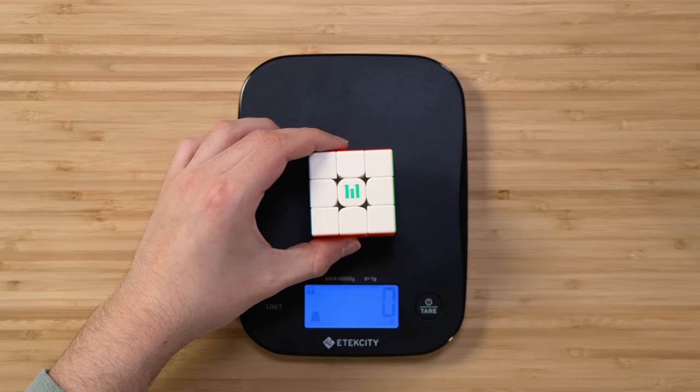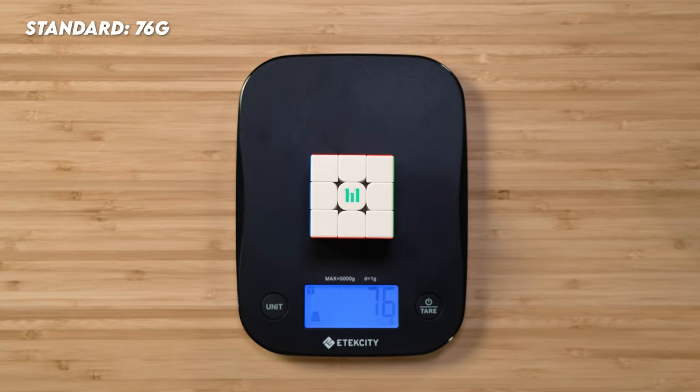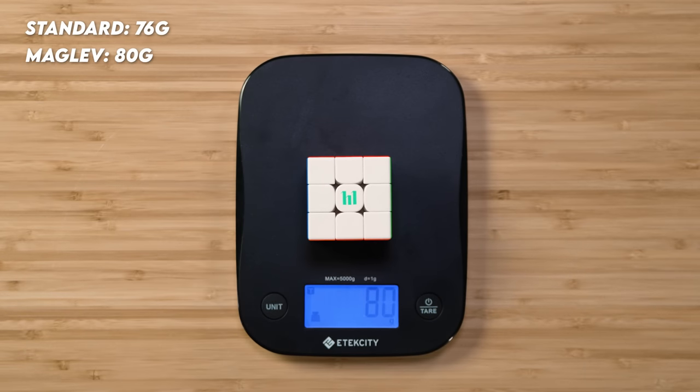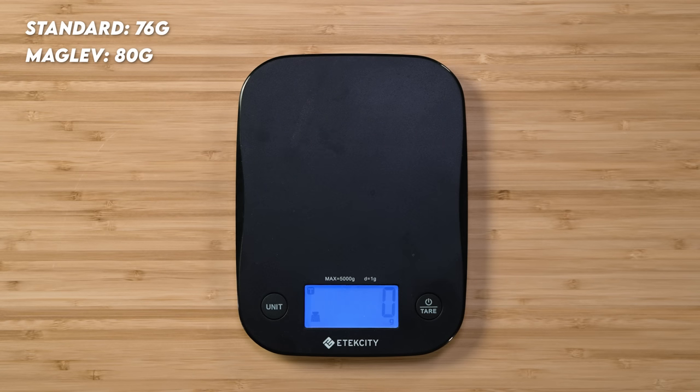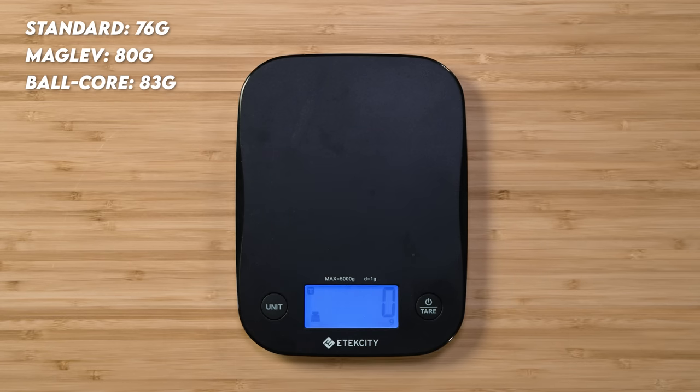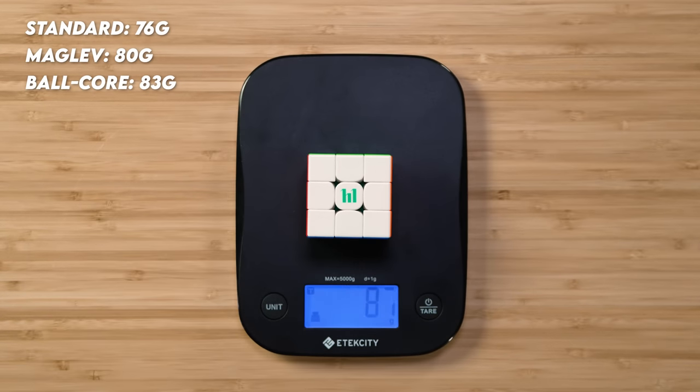The base form of this cube weighs 76 grams, and you'll see it get heavier as you add magnets for maglev and the ball core. The maglev version is 80 grams, only 4 grams heavier than standard. The ball core version weighs 83 grams, which is not a huge jump in weight, which is really surprising. And the UV-coated version is also 83 grams, so the exterior coating does not seem to add any additional weight.